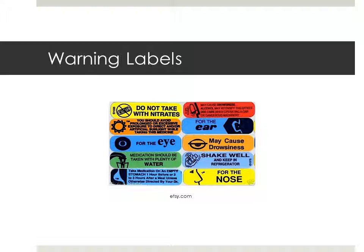The pharmacist puts warning labels on a prescription container to make sure the patient knows the best way to take the medication and be aware of possible situations to avoid. Some labels may include: shake well, keep refrigerated, do not drink alcoholic beverages with this medication, and avoid sunlight.